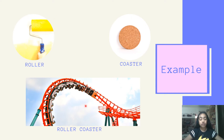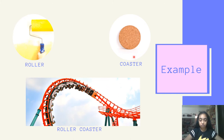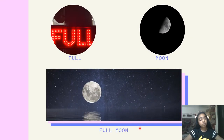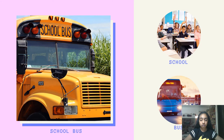Roller and coaster are mixed to make roller coaster. But in open compound words, we don't fully and completely join the words — there is always a space in between the two words. So roller and coaster are not completely joined together; they are just set together as one word. Another example is full and moon — we just put them together with a space to make full moon. School is a separate word and bus is a separate word. When we put these together with a gap in between, it makes school bus, which is an open compound word.